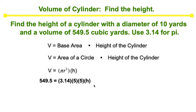Grab that calculator. Let's simplify the right side. And in order to isolate or solve for variable h, we would have to divide both sides by 78.5. And therefore, we would get a height of 7 yards.